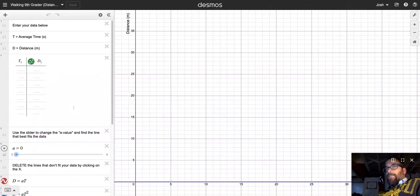Over on the left-hand side, you have a description of what the abbreviations for the variables stand for. Time equals average time, and distance equals d. Underneath that you have a blank data table. You're going to enter in the left column the average times from the class spreadsheet for this type of motion, for walking, and then the distances that we measured the times at.